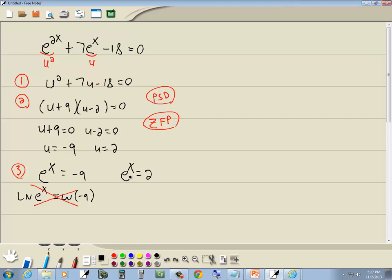We're going to do the same steps over here. Get the part of the variable in the exponent by itself, no numbers in front, no numbers after. That's done. The second step is to take natural log of both sides. So ln e to the x equals ln 2.